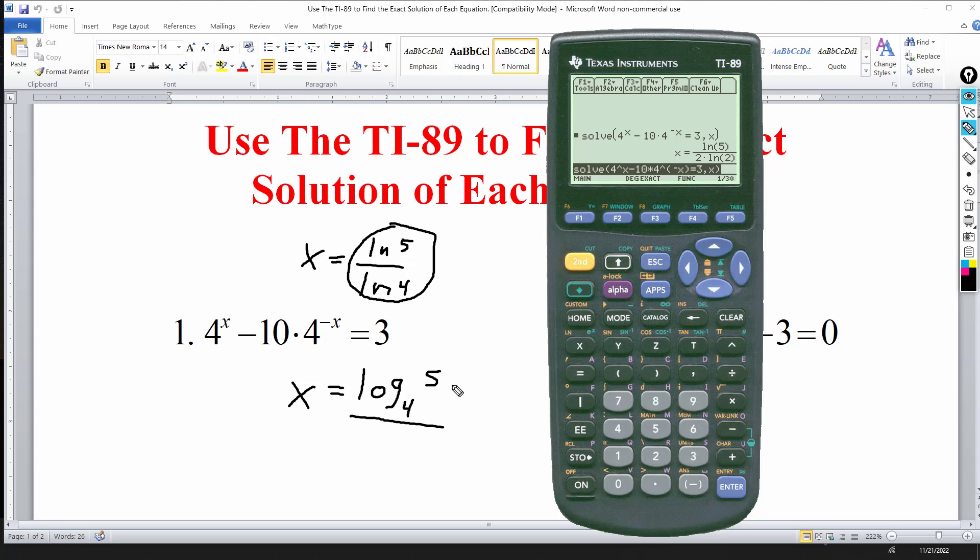By using the change of base formula you can rewrite this also as, you pick your base. So normally you pick base 10 or base e because that's what you have in your calculator. So in that case if I use the natural log that would be the natural log of the 5 over the natural log of whatever the base is. Of course in this case it's 4. I get the natural log of 4.